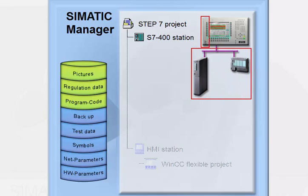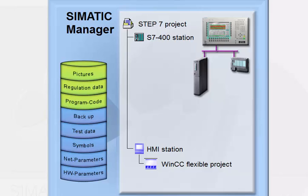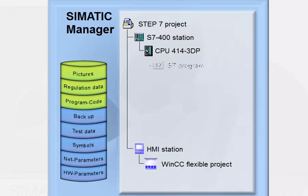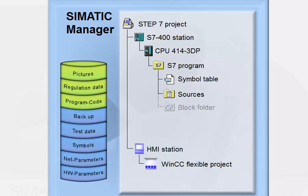A project comprises mainly the following hierarchically structured objects: one or more stations containing all the data of a controller. This includes, on the one hand, the configuration data with the station's hardware structure and the parameters of the modules used, and on the other hand, all user program data contained in the CPU object. The CPU object has the connections of the CPU assigned to it, and the S7 program contained in the CPU. The S7 program object contains the symbol table, the program source folder, and a folder containing the user program blocks with the executable code.